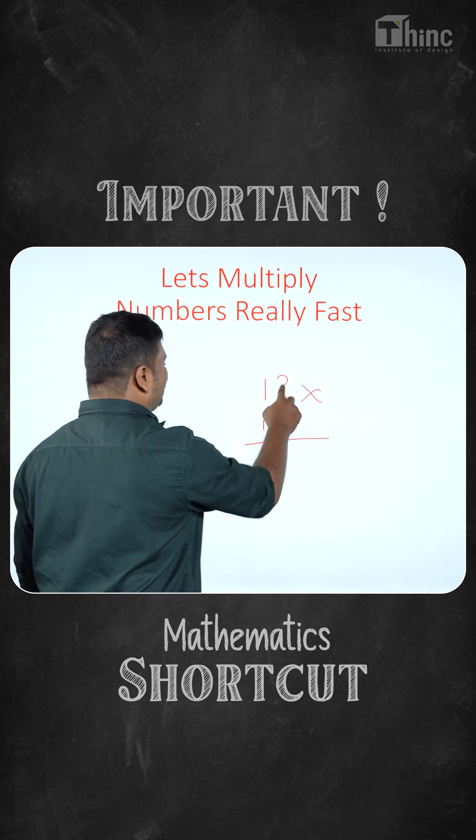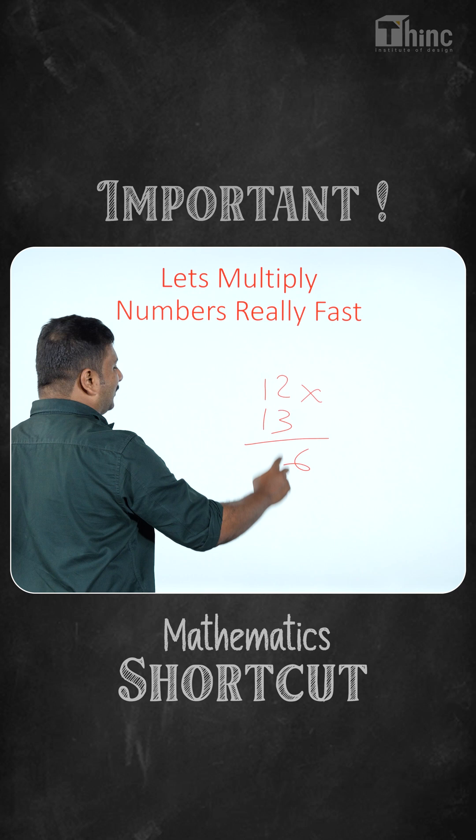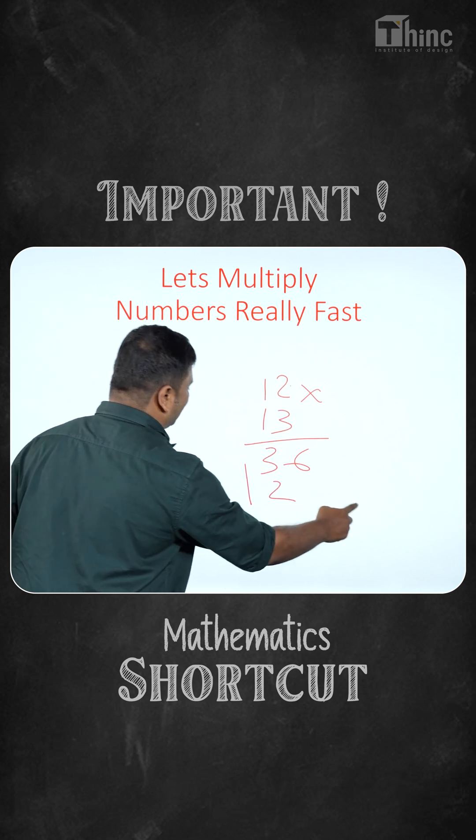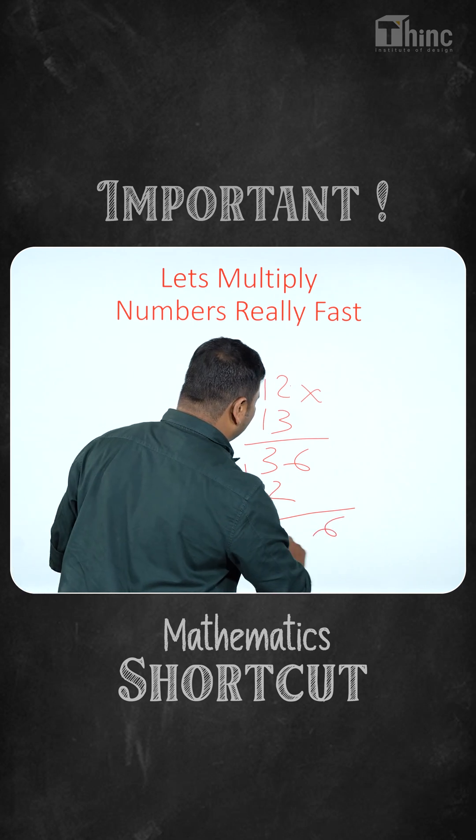So what we actually do is we will do 3 x 2 that is 6, then we will do 1 x 3 that is 3, then we will do 1 x 2 that is 2, then we will do 1 x 1 that is 1, then we will add all this. So we will get 156.